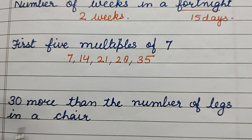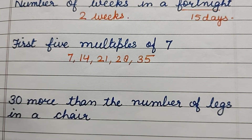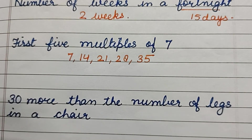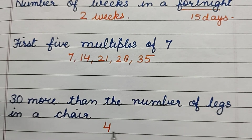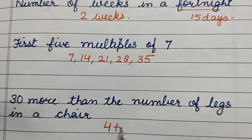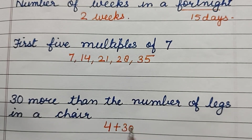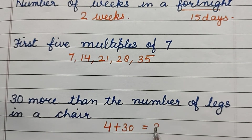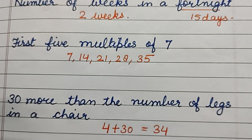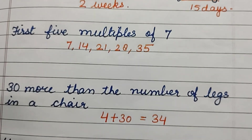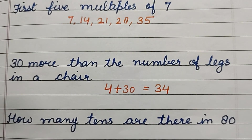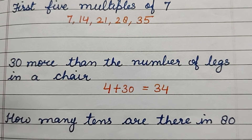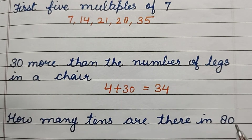Now, 30 more than the number of legs in a chair — how many legs are there in a chair? 4. And 30 more than it: 4 plus 30 is equal to 34.